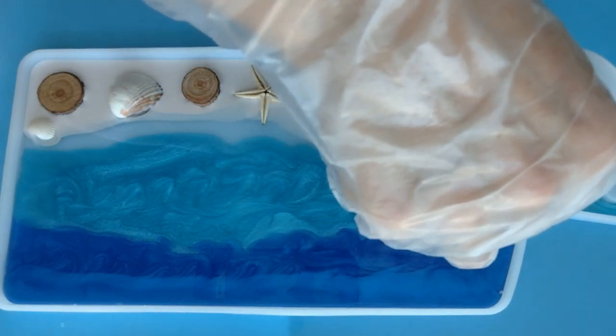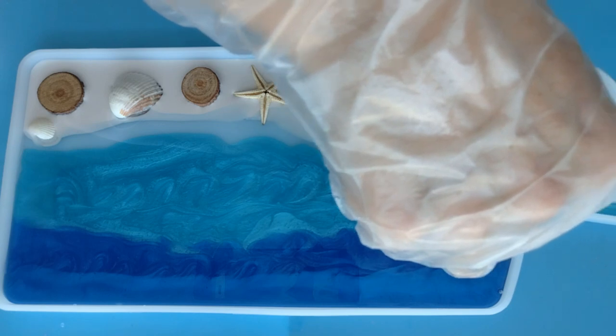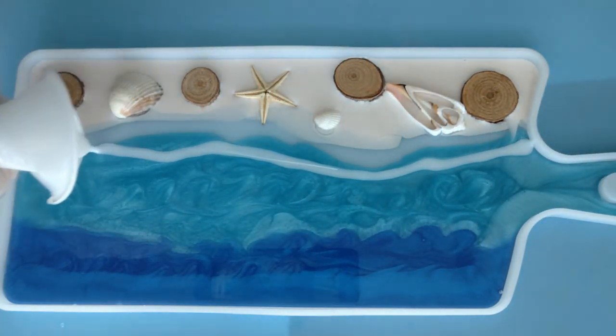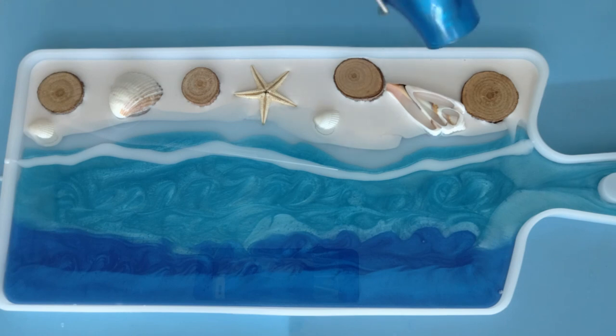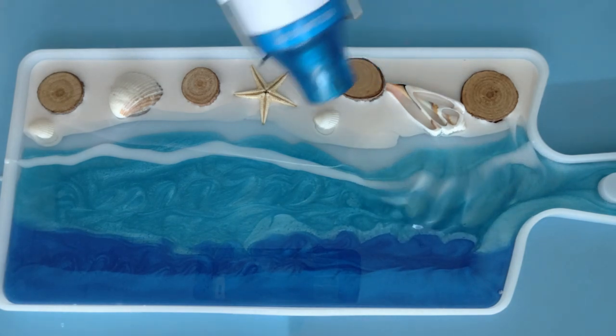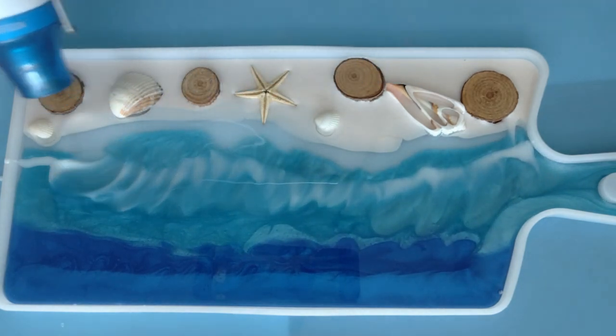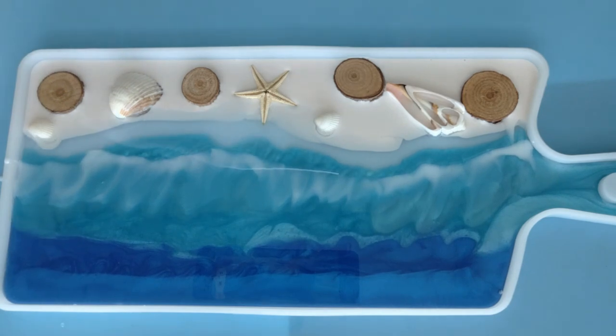And then I started pouring my white for my ocean waves. So what I've noticed from the beginning when I poured this white, that my white was actually too light, so I had to add some more white pigment paste into my white.